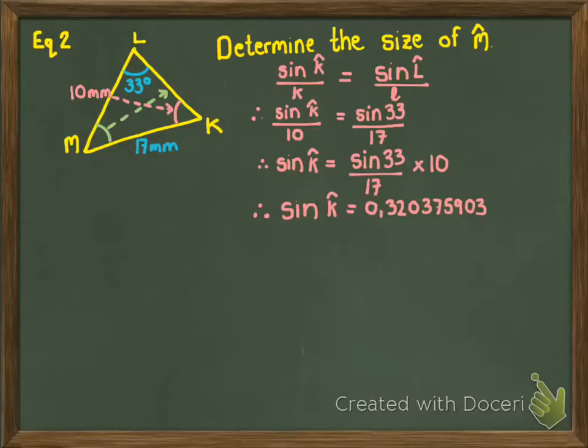Now, keep all the decimal places on your calculator, because we're going to use the inverse operation of sine to find the angle. So, I'm going to use shift sine on my calculator to calculate angle K as 18.69 degrees.